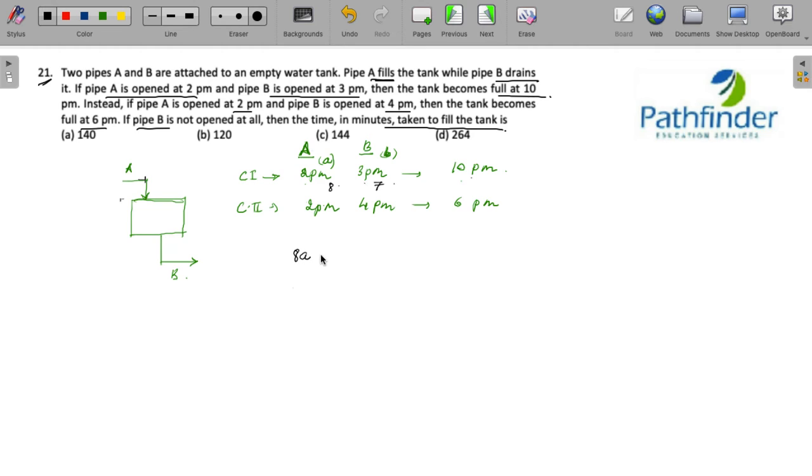8 times rate of A minus 7 times rate of B fills the tank. Let's say the capacity of tank is C, or if you don't like C, you can take it as V.